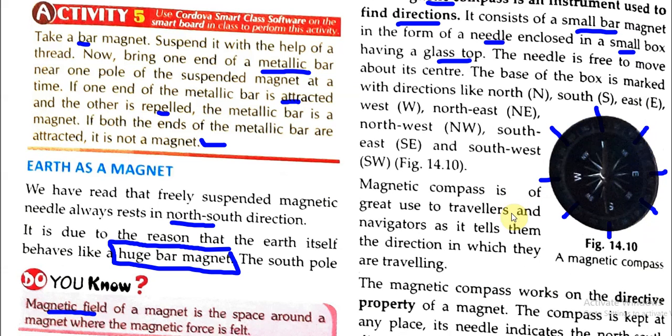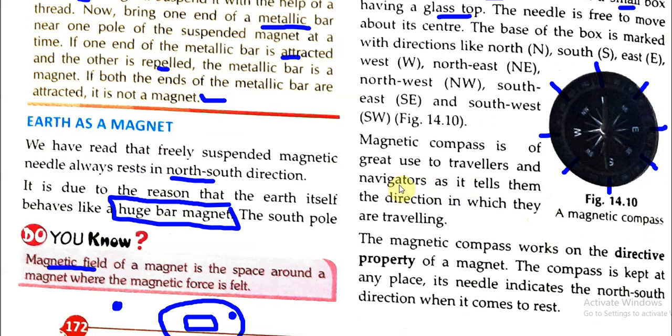A magnetic compass is of great use to travelers and navigators as it tells them the direction in which they are traveling.